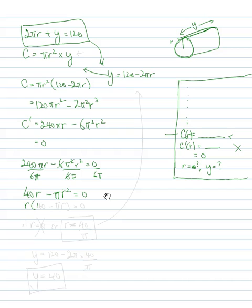Bringing the r out the front, r(40 - πr) = 0. Therefore, r = 0, or r = 40/π.